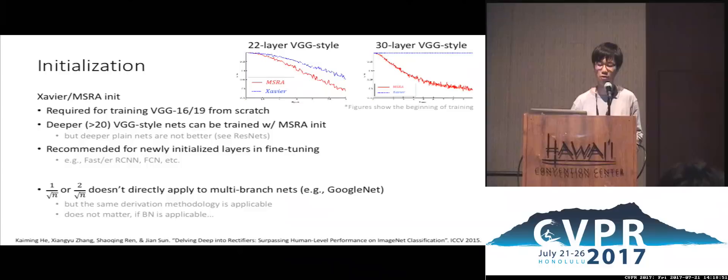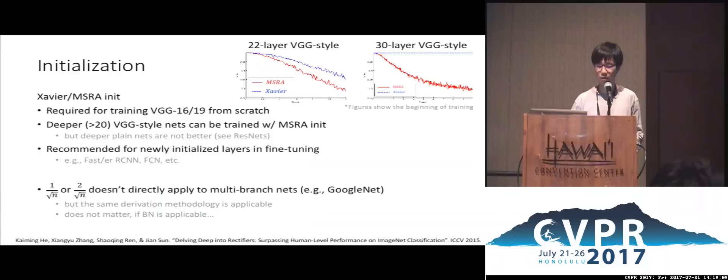It is worth mentioning that the mathematical derivation of these two initialization types does not directly apply to multi-branch networks such as GoogleNet. However, the same derivation methodology is applicable, and we can derive initialization for different types of inception blocks. Usually, now we don't need to do this because we have batch normalization.